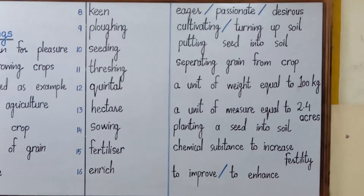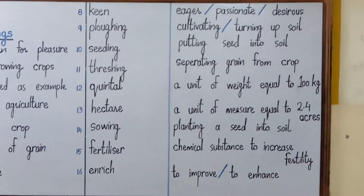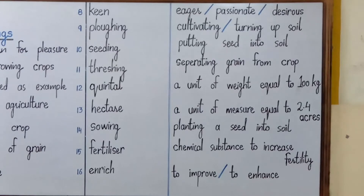Number twelve is 'quintal'. It is a unit of weight which is equal to one hundred kilograms. Number thirteen is 'hectare'. It is a unit of measure which is equal to two point four acres.